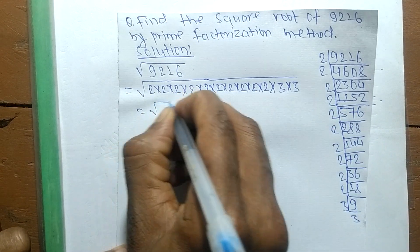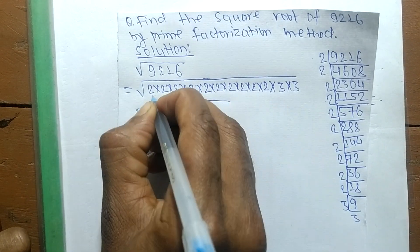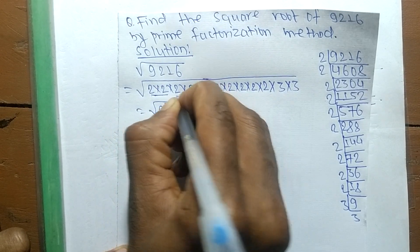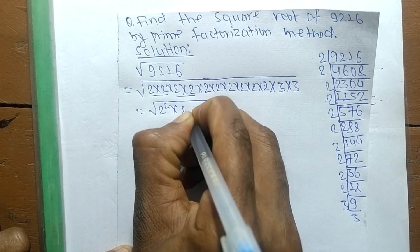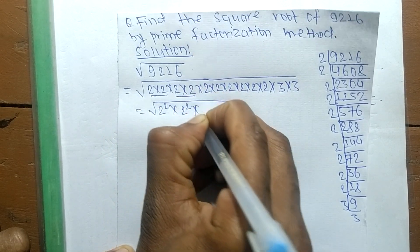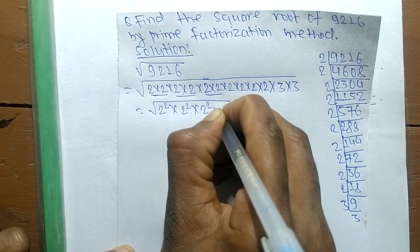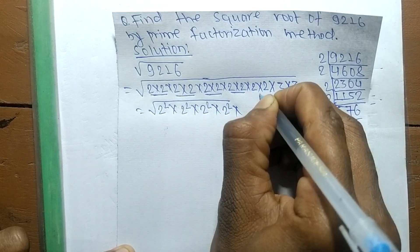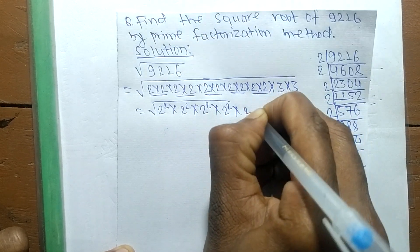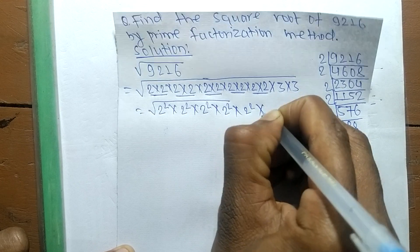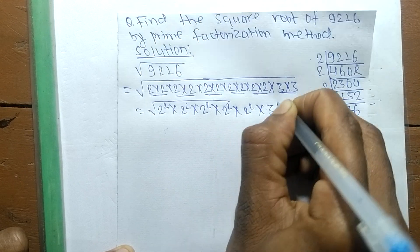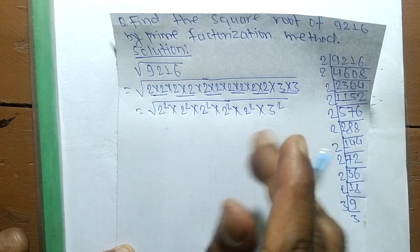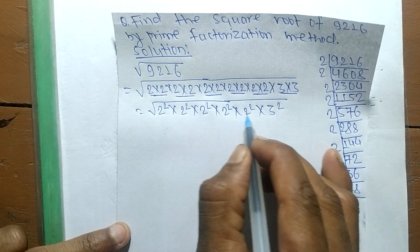We take the prime factors and arrange them as pairs: 2 × 2, 2 × 2, 2 × 2, 2 × 2, 2 × 2, and 3 × 3. A square is present in all these numbers, so we take the square as common: (2 × 2 × 2 × 2 × 2 × 3) whole squared.